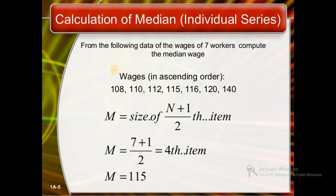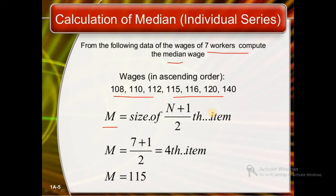For calculation of median in an individual series: median can be calculated from data such as wages of seven workers. The values are arranged in ascending order. To calculate the median, all values are arranged in ascending or descending order, and median is found using the formula: size of the (n+1)/2 th item. Here, with 7 values, (7+1)/2 = 4th item, which is 115. So this is the median.